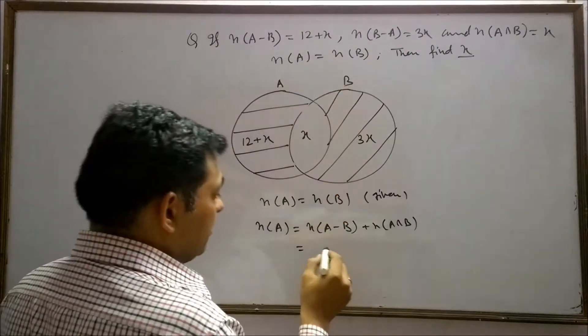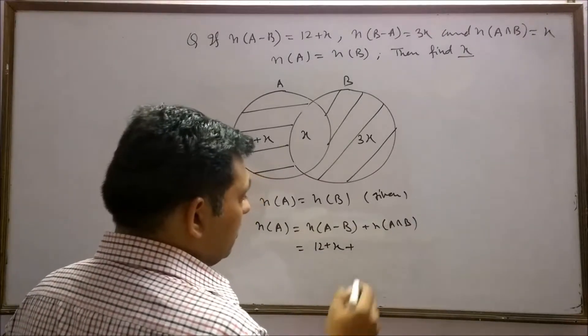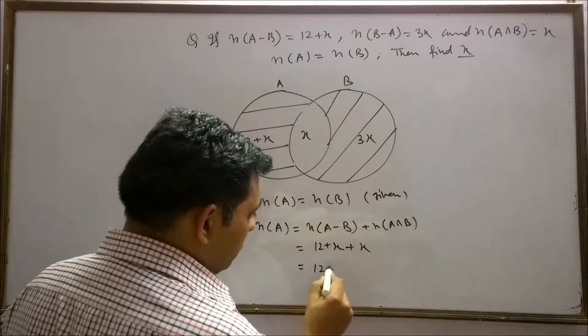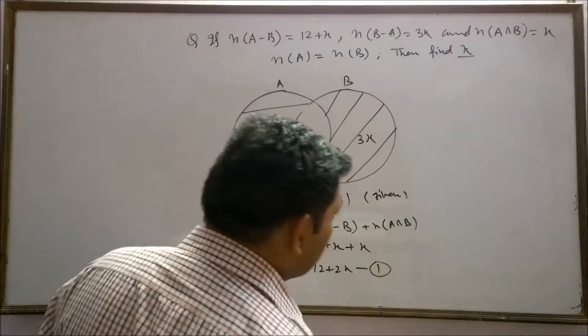This set contains 12 plus x element. This set contains x element. So it means 12 plus 2x is equals to n(A). This is our first equation.